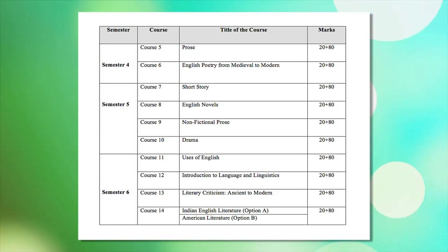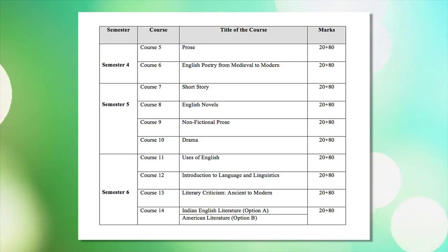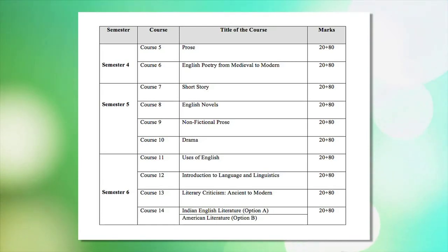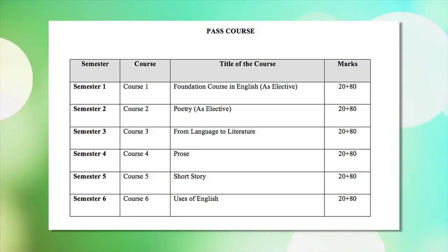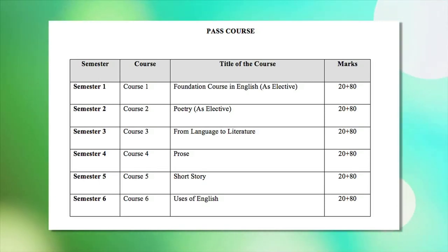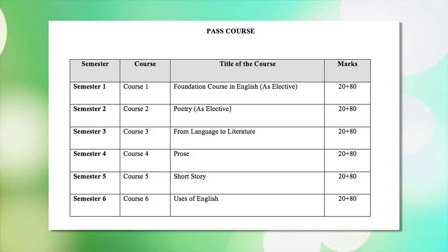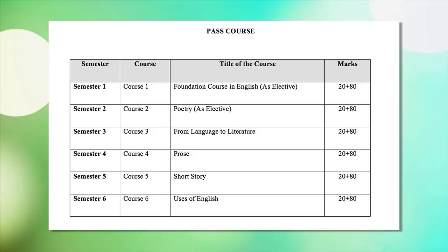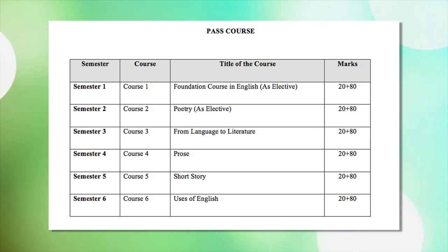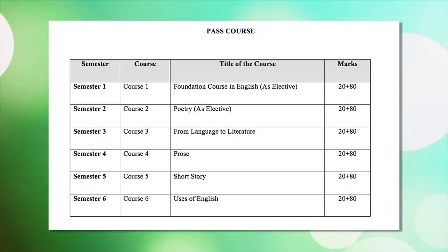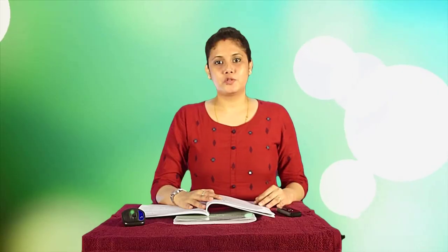The optional papers are Indian English Literature, which is option A, and American Literature, which is option B. For the pass course learners, the papers to be studied are: in first semester, Foundation Course in English; in second semester, Poetry; in third semester, From Language to Literature; in fourth semester, Prose; in fifth semester, Short Story; and in sixth semester, Uses of English.